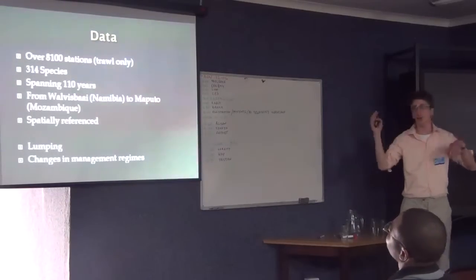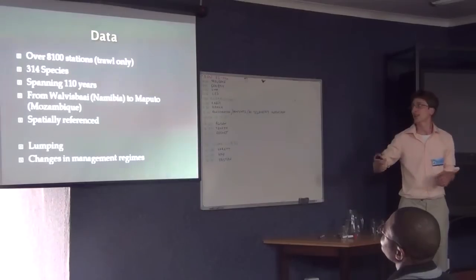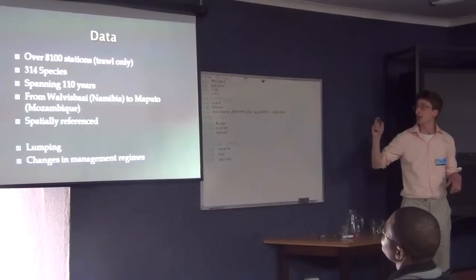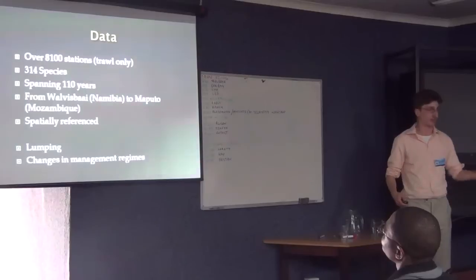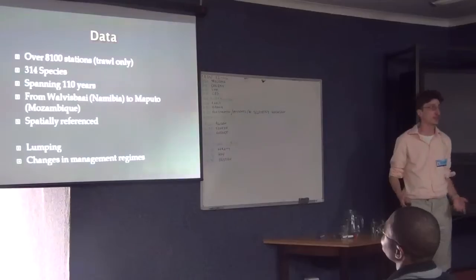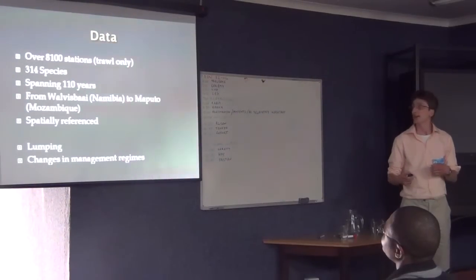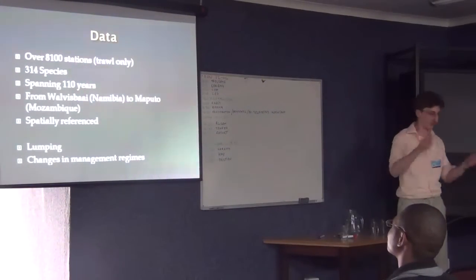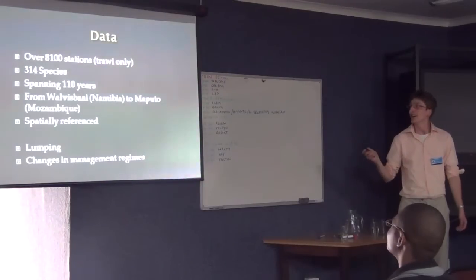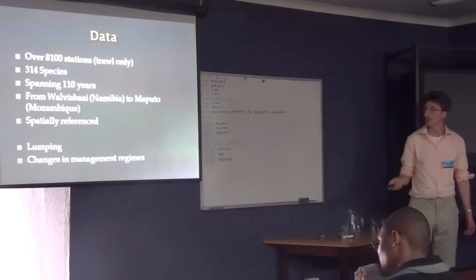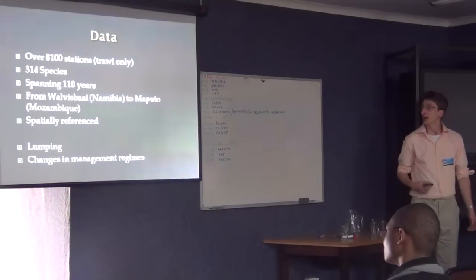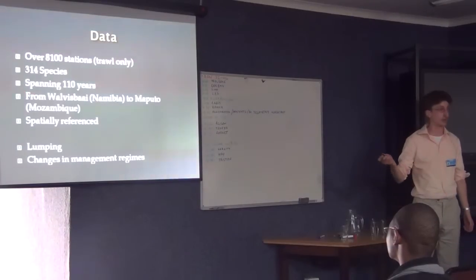After compiling all those five data sets, I ended up with 8,100 trawl points. That was trawl only; the early surveys actually used more than one type of gear. In total it was about 314 species. The historical surveys were exploratory in nature, so they included sponges, crabs, and invertebrates. They spanned 110 years in total and geographically ranged from Walvis Bay to Maputo. Everything was spatially referenced, which is why we could actually do this analysis.